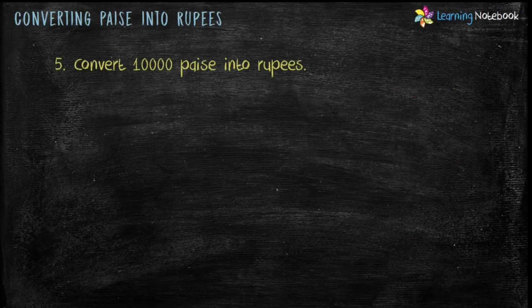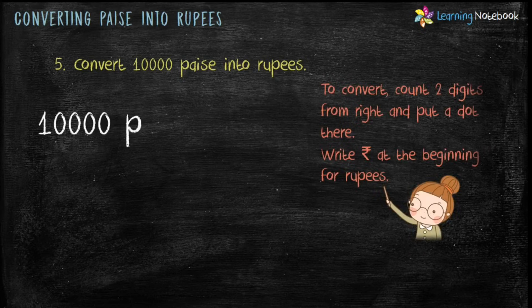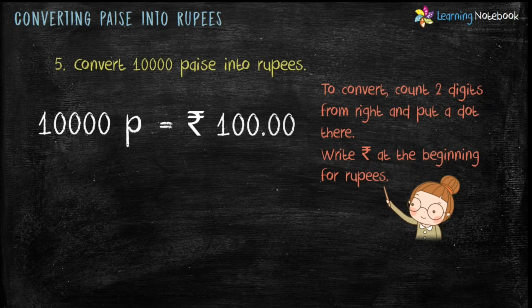Question: convert 10,000 paise into rupees. Count two digits from the right and put a dot there. Put a dot before 00 and 10,000 becomes Rupees 100.00. Rupees 100.00 means Rupees 100 and 0 paise, so we can also write it as Rupees 100. This is how we convert paise into rupees.